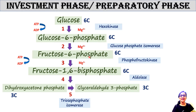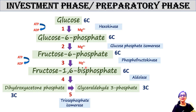Fructose-6-phosphate is then converted into fructose-1,6-bisphosphate. An extra phosphate group is added to carbon number 1 of fructose. The reaction is performed by phosphofructokinase, which adds one phosphate group — hence it is a kinase. This enzyme requires magnesium as a cofactor, and one molecule of ATP is consumed.